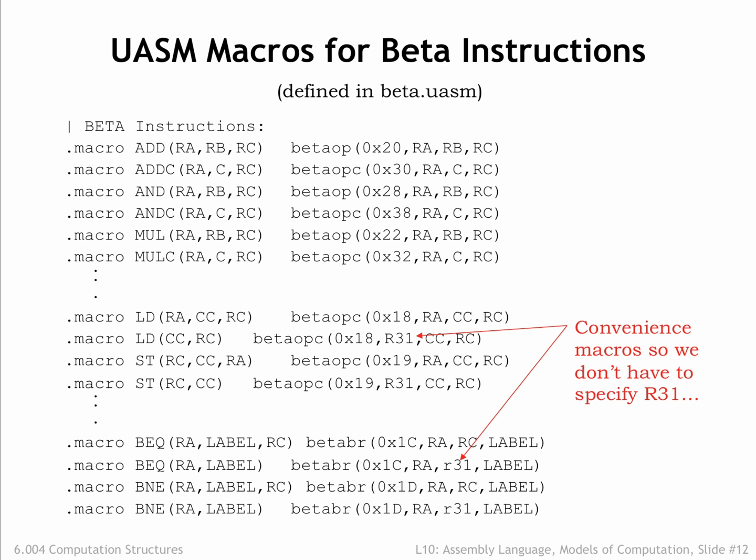Note that we include some convenience macros to define shorthand representations that provide common default values for certain operands. For example, except for procedure calls, we don't care about the PC+4 values saved in the destination register by branch instructions, so almost always we would specify R31 as the RC register, effectively discarding the PC+4 values saved by branches.